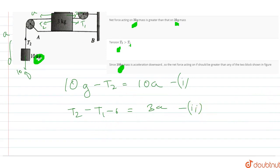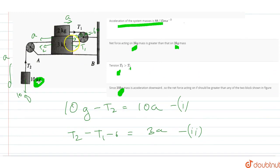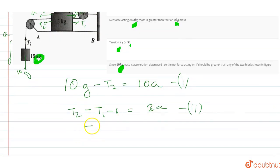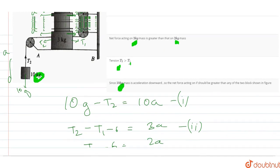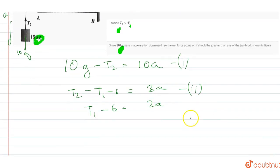And I will write another equation for the 2kg block. If the 2kg block is pushed by the 3kg block here, friction force will act. So in the 2kg block, the force in this direction is 6N. So here the equation is T1 minus 6 is equal to 2A.